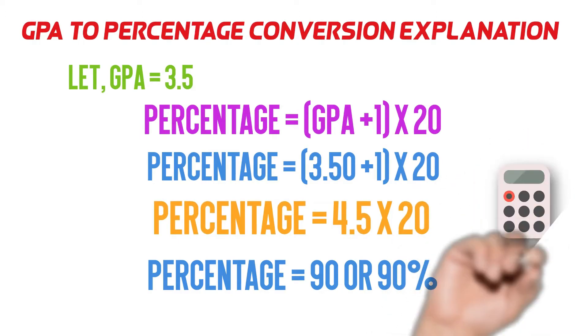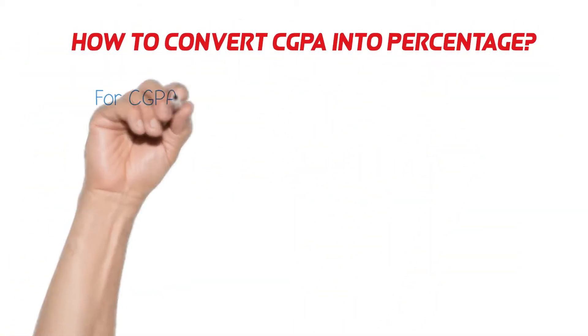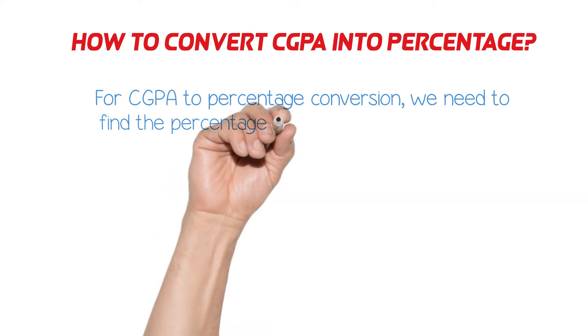Now you may find your percentage from your GPA number. Now we take a look, how to convert cumulative grade point average into a percentage the easiest way.